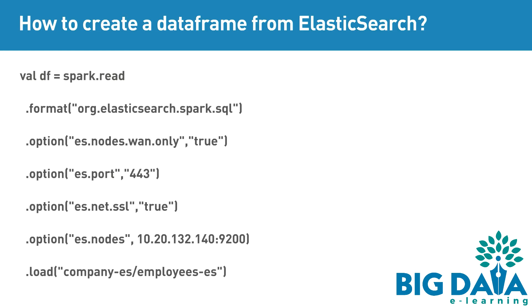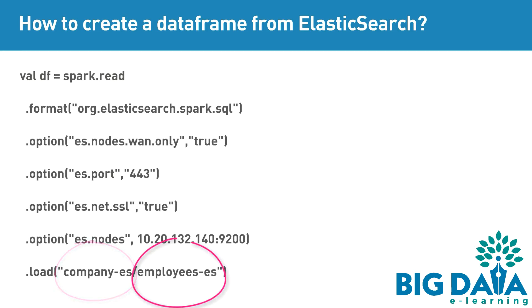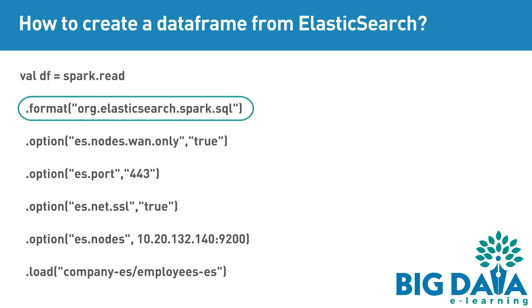Here is the command to create a DataFrame from an Elasticsearch index called CompanyES, which has a type CompanyES. The format parameter indicates that it should use the org.elasticsearch.spark.sql libraries.